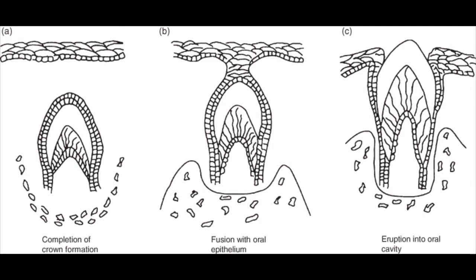The third theory is the periodontal ligament theory, which argued that the actions of fibroblasts and collagen remodeling forces the tooth out into the oral cavity. However, it is important to consider that the periodontal ligament is not the sole mediator of tooth eruption, because during experiments when drugs were used which stopped the formation and synthesis of collagen, tooth eruption was not hindered. So this theory was also rejected.